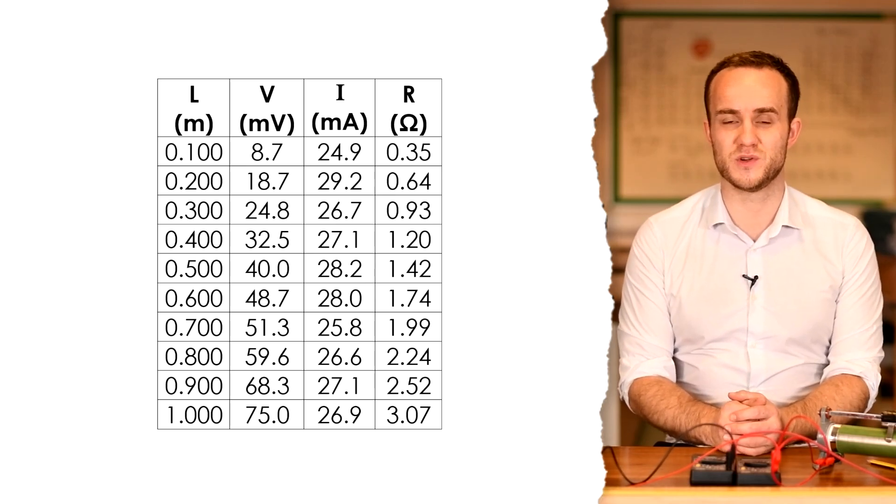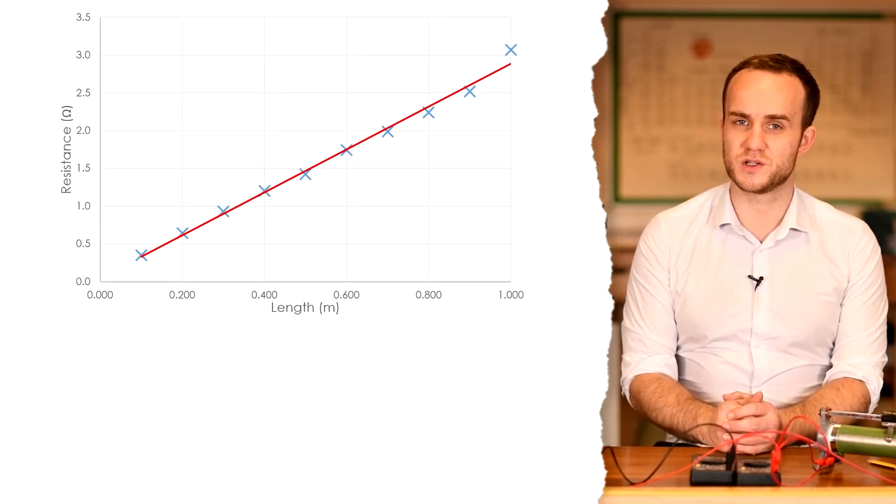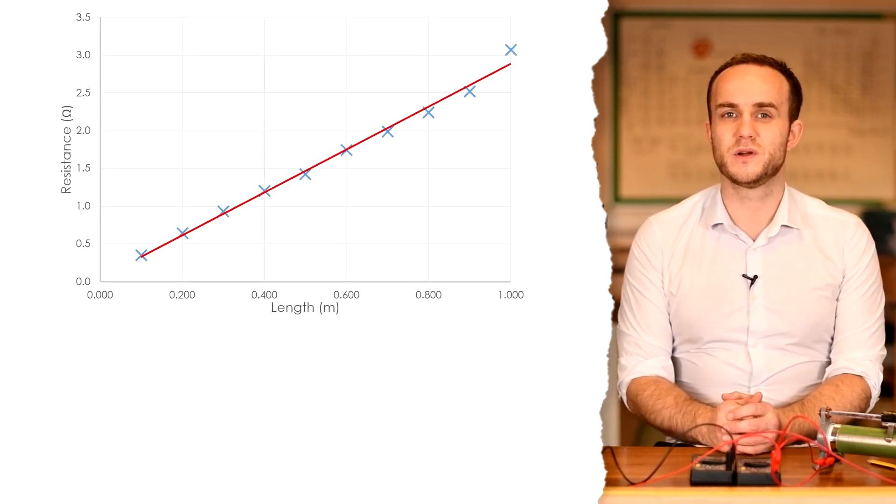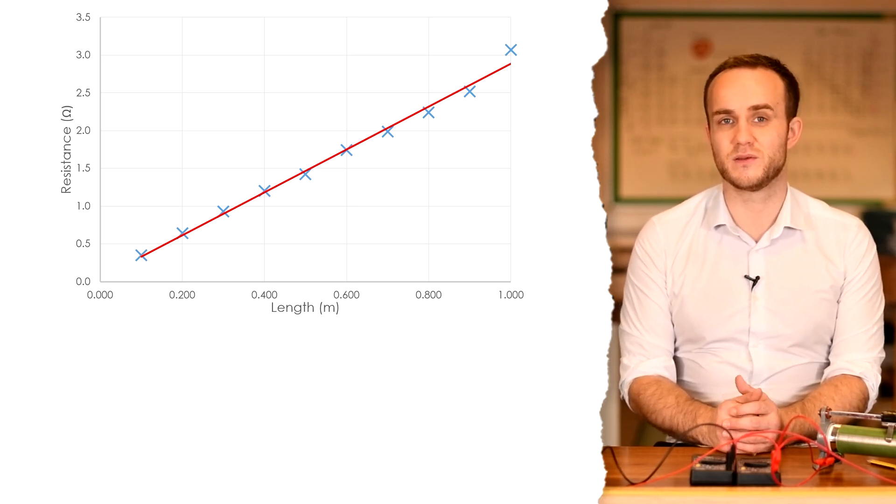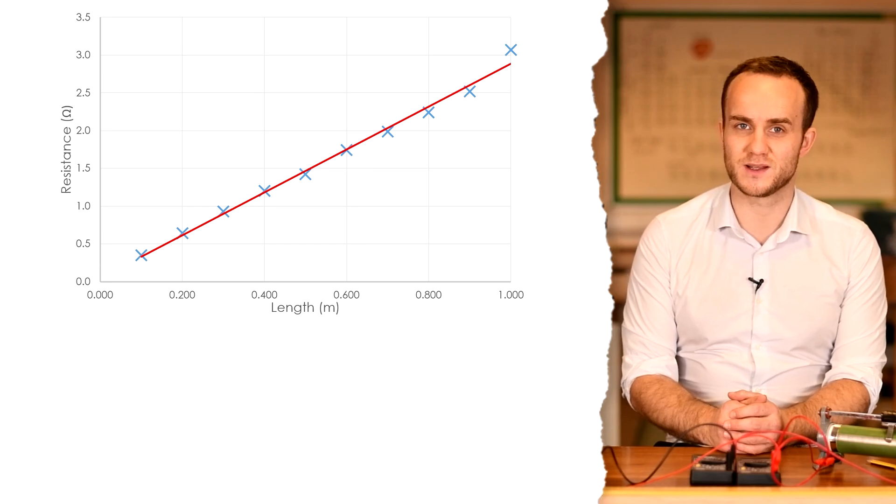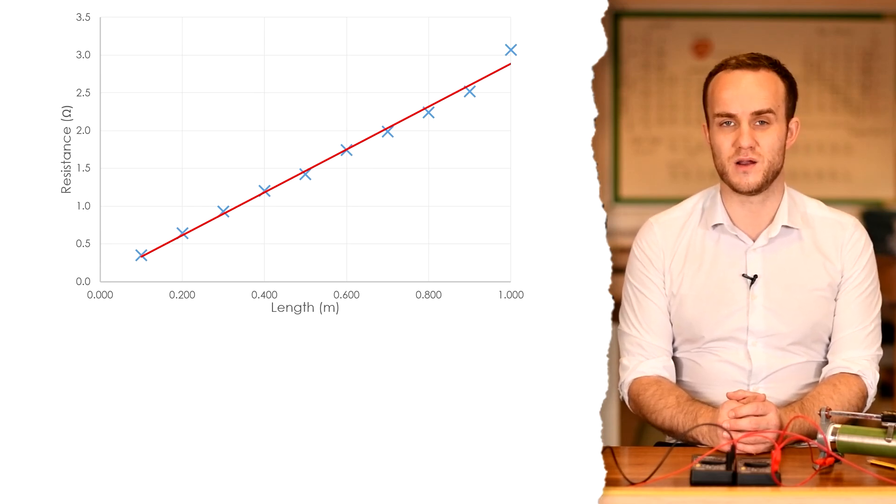Here are all of my resistances for those lengths. What I can then do is draw a graph. And it should be a straight line graph that goes through the origin. We're going to put resistance on the y-axis and length on the x-axis. Now if we draw a line of best fit and find the gradient, that gives us R over L.